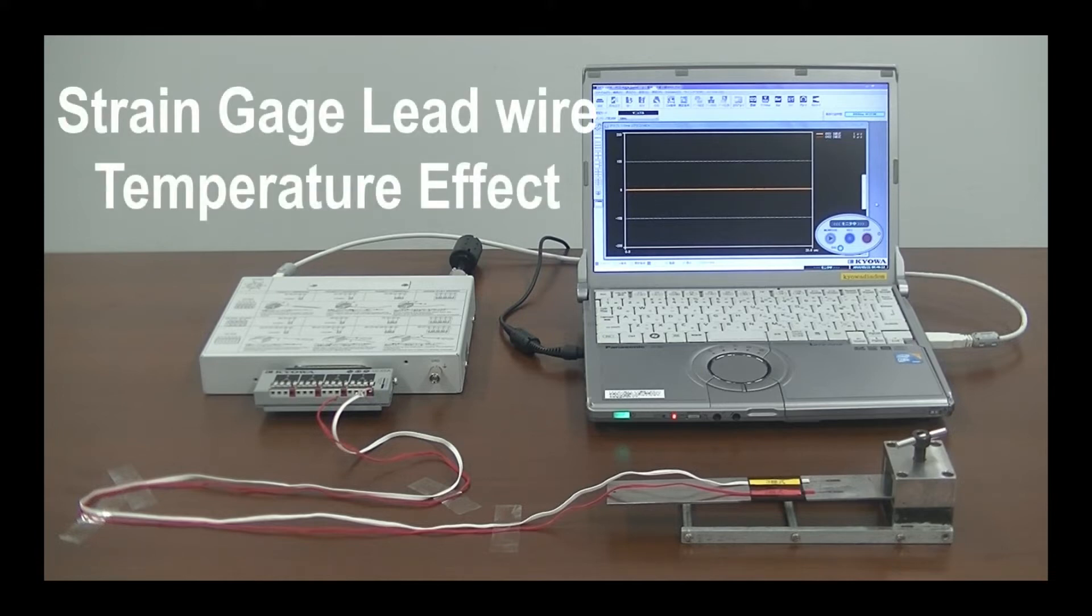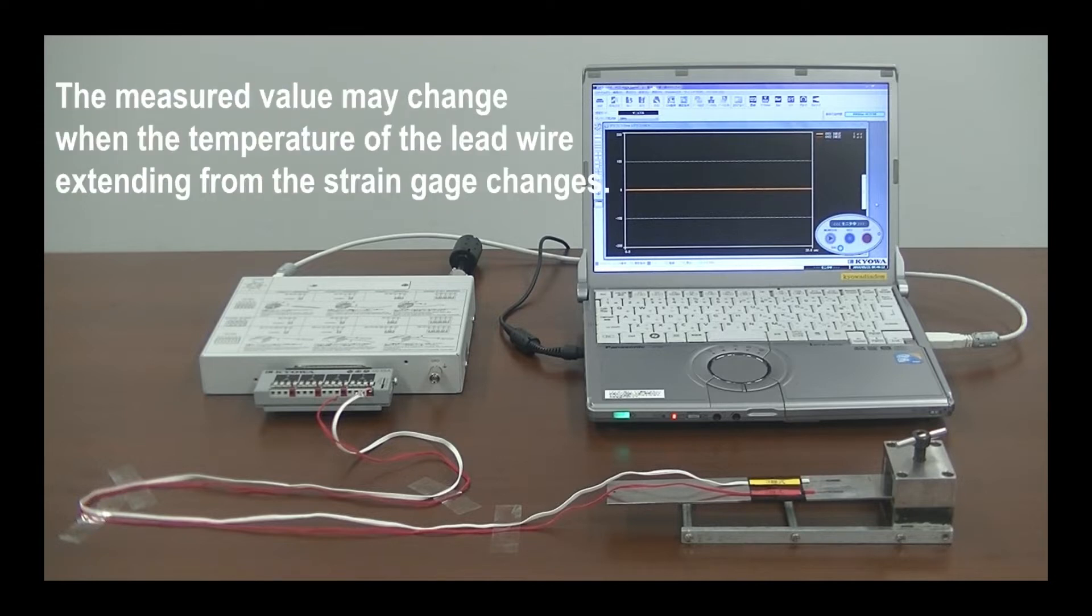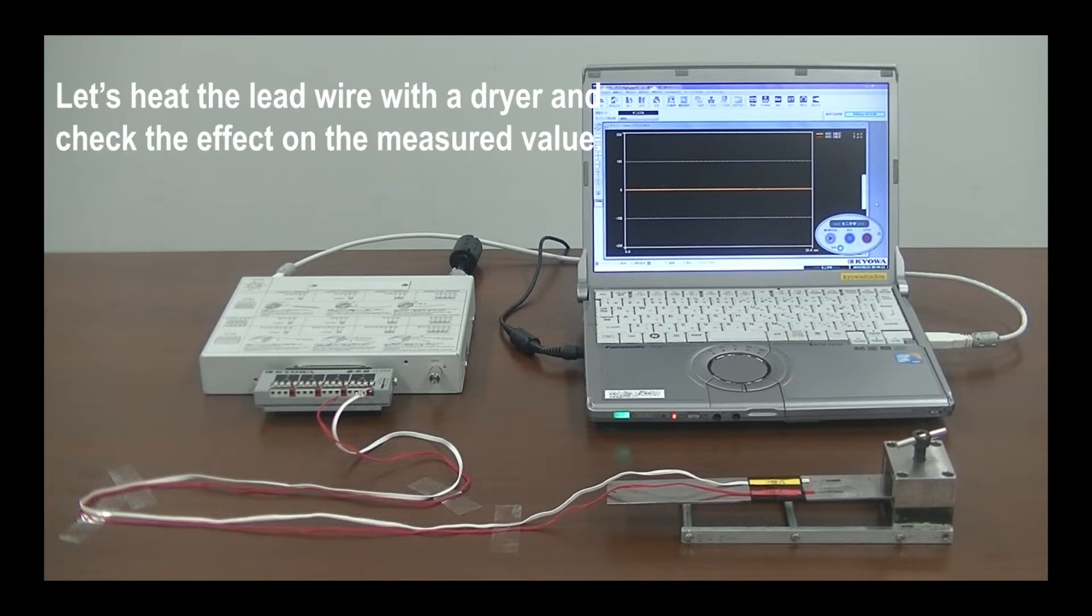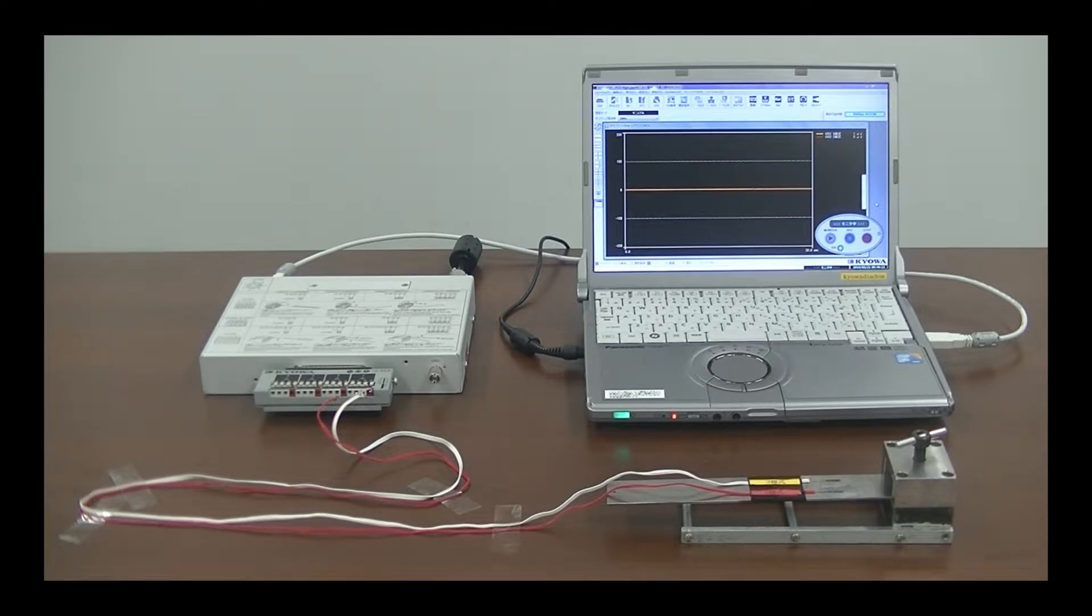Using just two wires might seem to be the obvious way to connect a strain gauge circuit. However, changes in temperature will affect the measurement accuracy in two ways. Firstly, the gauge application point will expand and contract with change in temperature. Secondly, the lead wire will change resistance with temperature. The three-wire circuit can help with this.